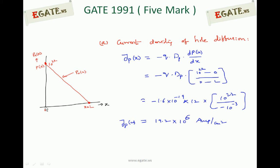So the current density of hole diffusion can be written as minus Q into DP into dP(X)/dX. We use two points — let's call them point A and point B. From those two points we can write the slope as (Y2 minus Y1) divided by the change in X, which gives the change in P(X) over the change in X. So that becomes: (10 to the power 22 minus 0) divided by (0 minus L), the diffusion difference in concentration being 10 to the power 22 minus 0 divided by the difference in length, X equal to 0 minus X equal to L.